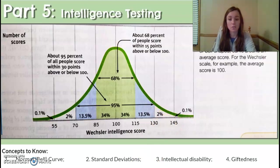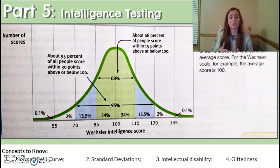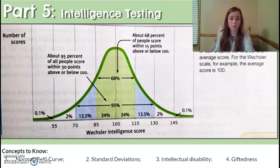Another term in this unit is Down syndrome. Down syndrome is not the same as an intellectual disability — it is in its own category, though the two can co-occur. Down syndrome is a specific condition caused by an extra copy of chromosome 21, and an individual with this condition may experience anywhere from mild to severe intellectual impairments.